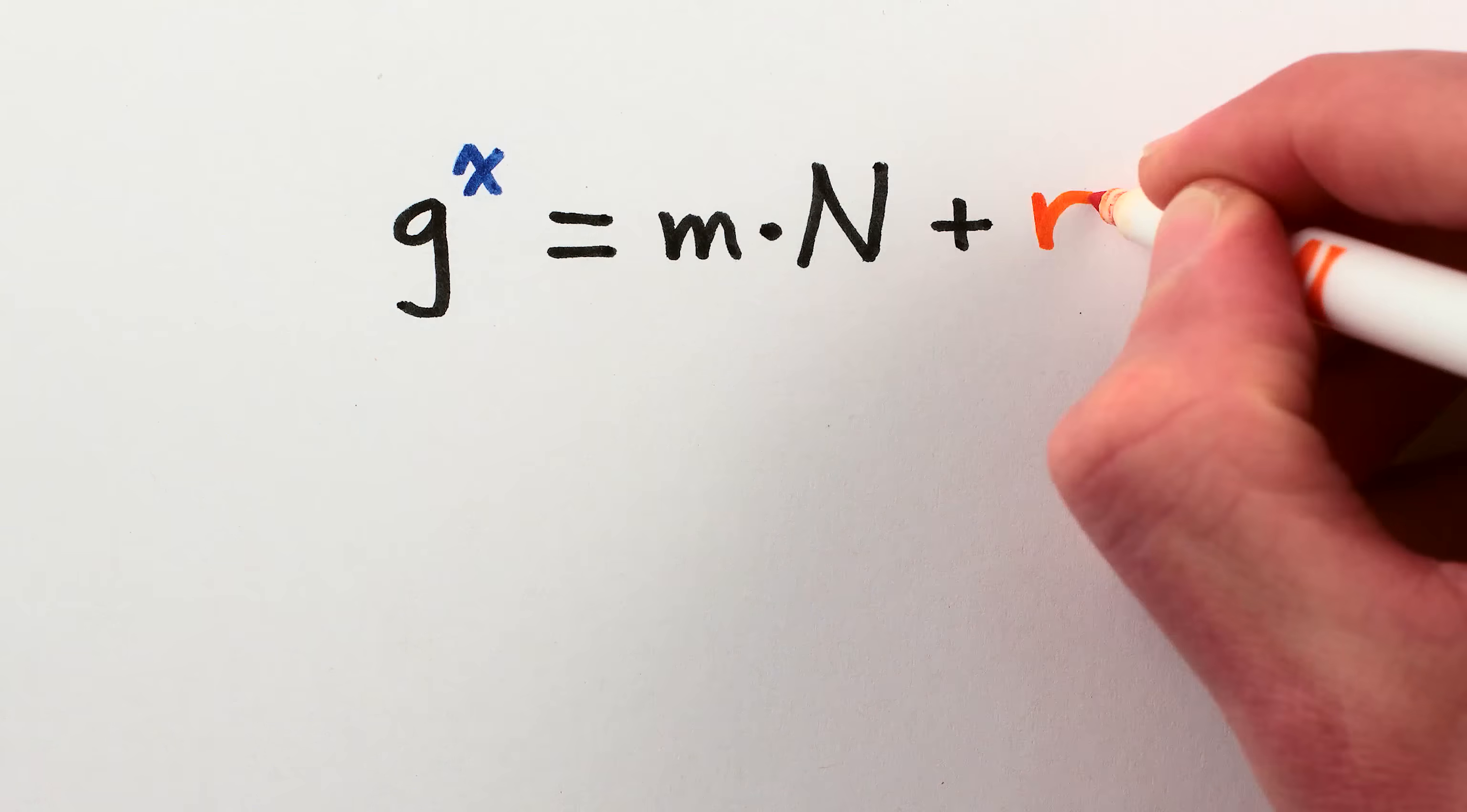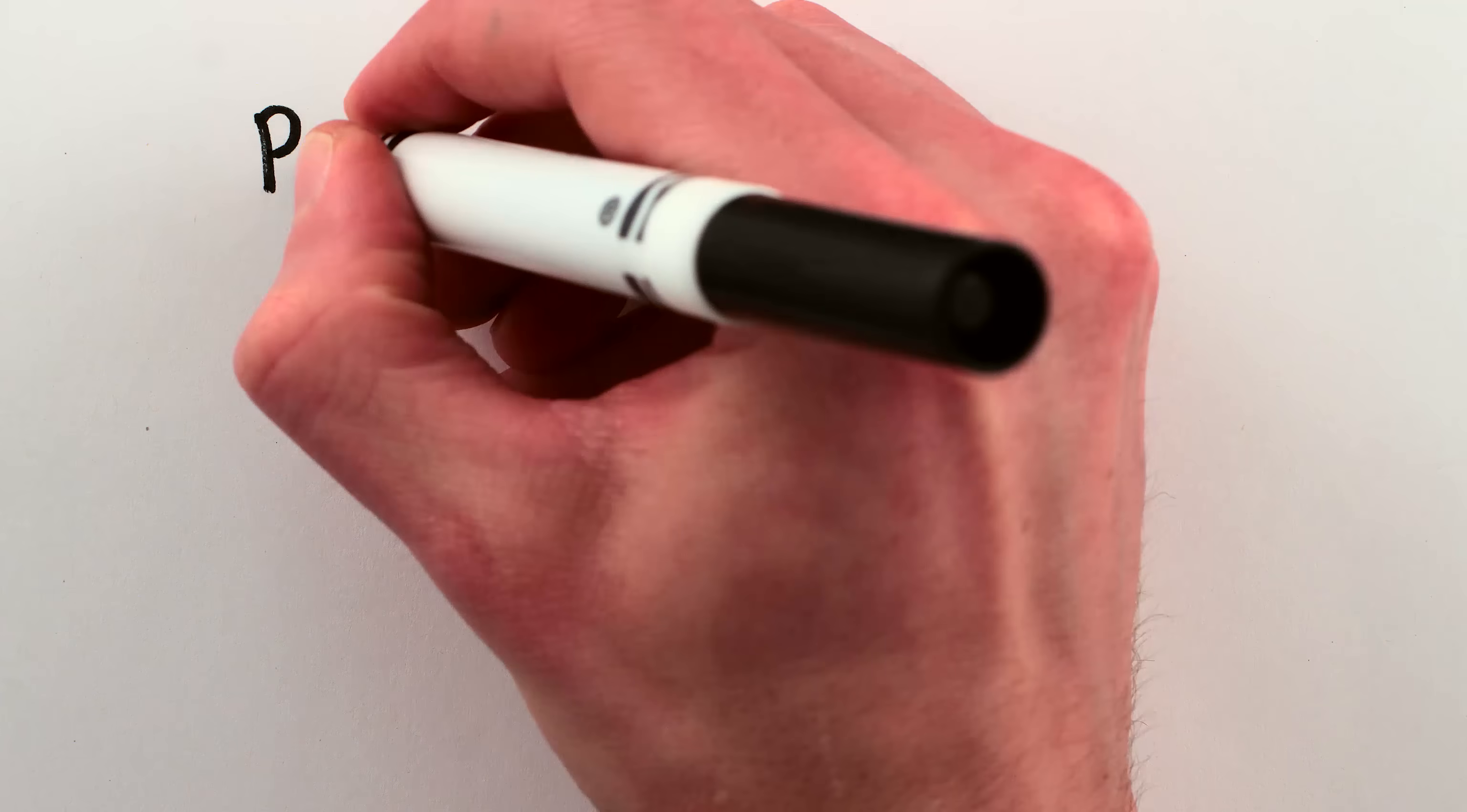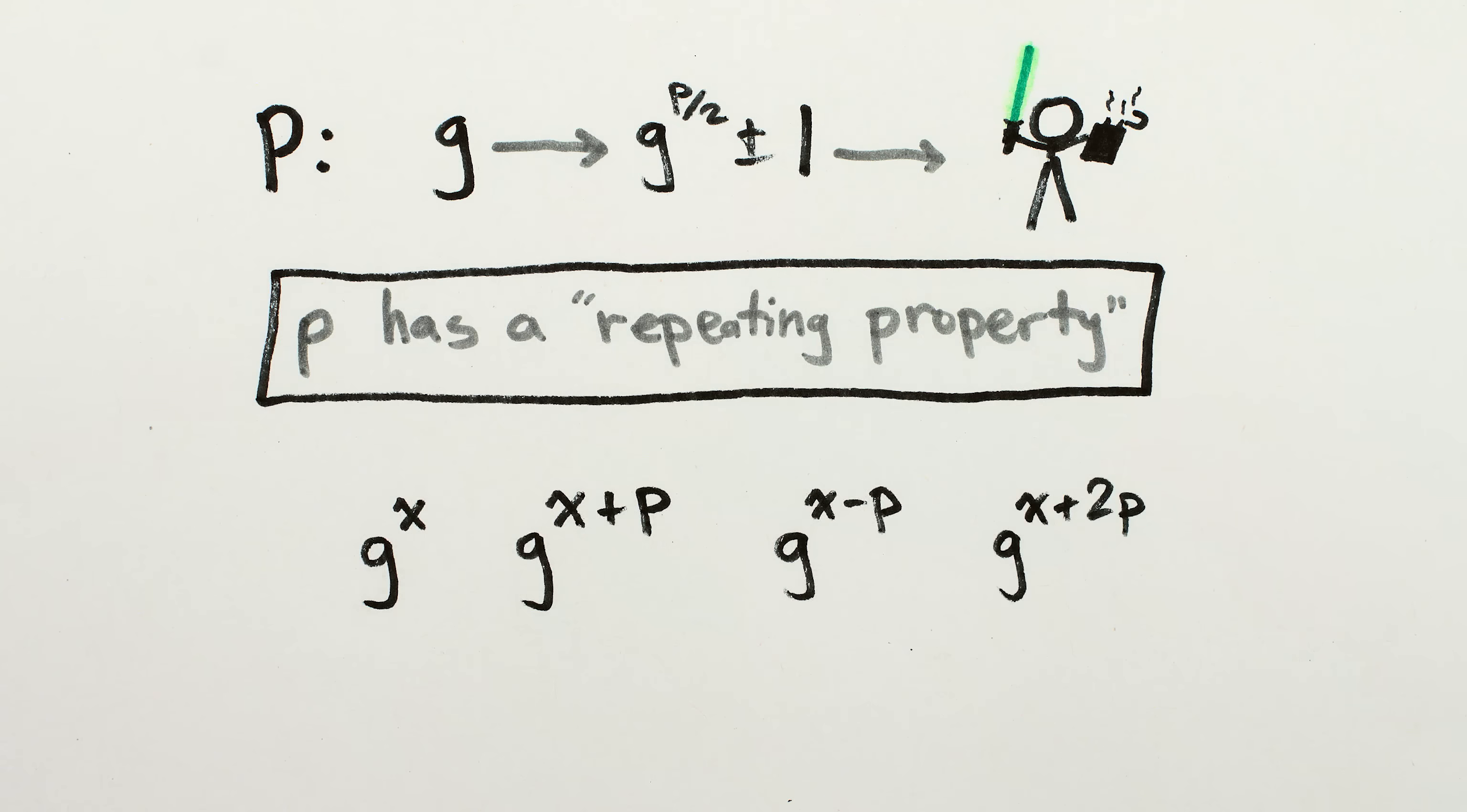And this works for any power x. If g to the x is r more than a multiple of n, then g to the x plus P will also be r more than a multiple of n, though a different multiple. So the power P that we're looking for, the one that allows us to improve our crappy guess and find factors of n and break encryption, it has a repeating property where if we take another power and add or subtract P to it, the amount more than a multiple of n stays the same.